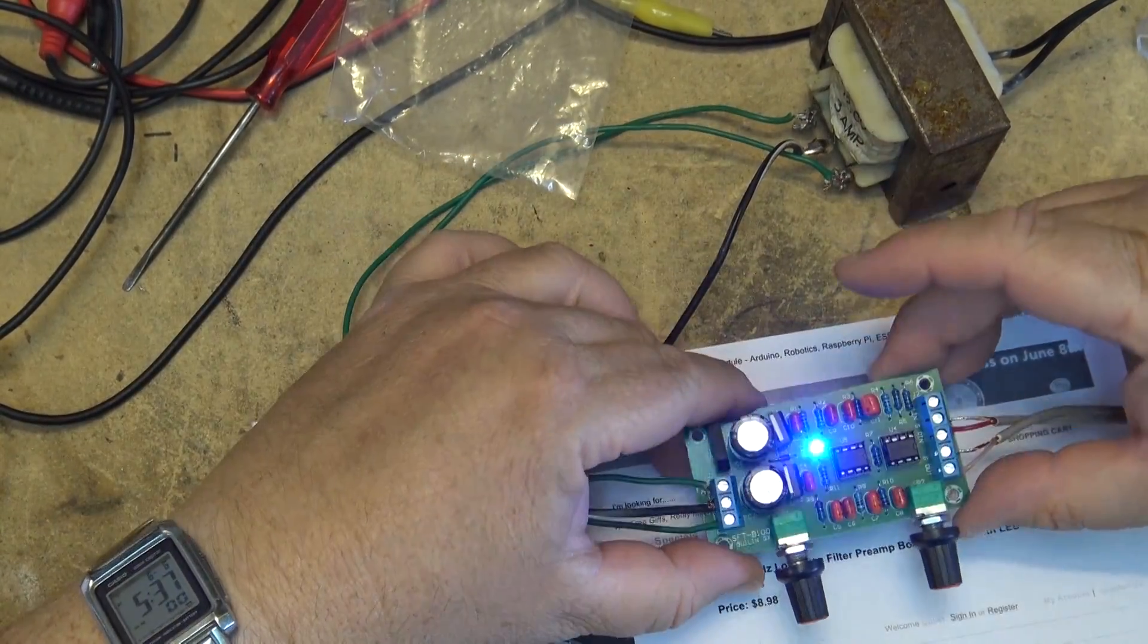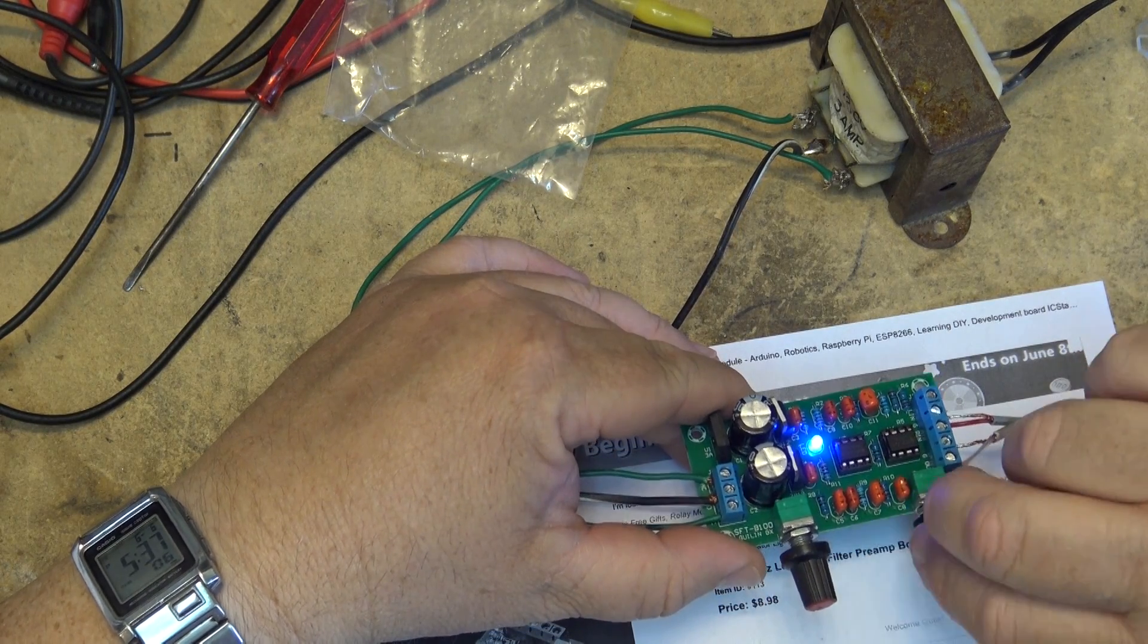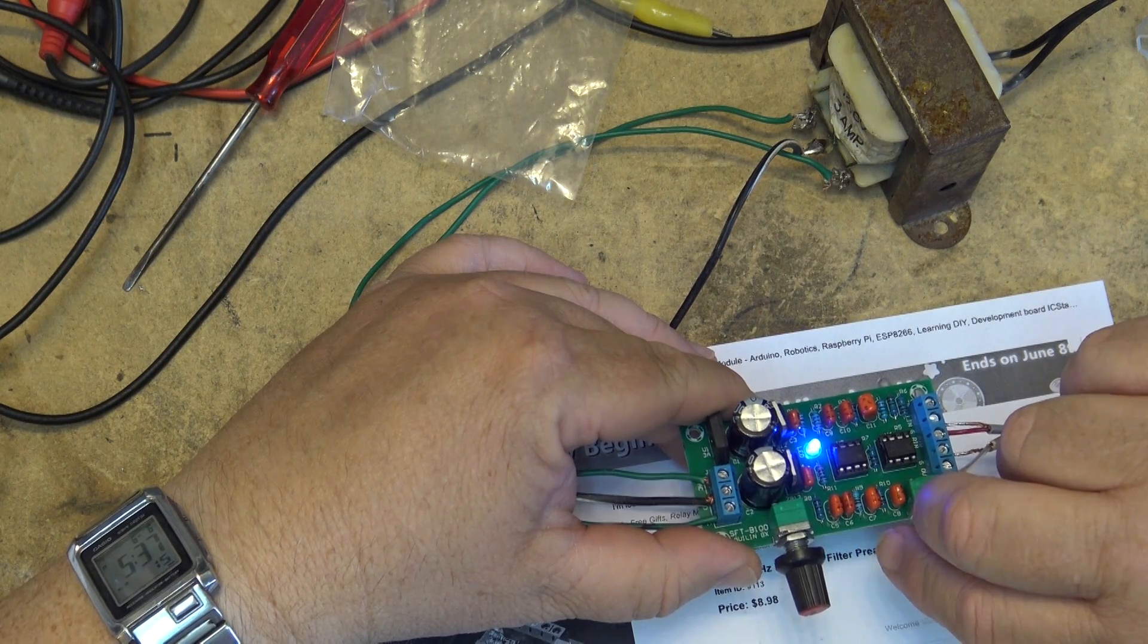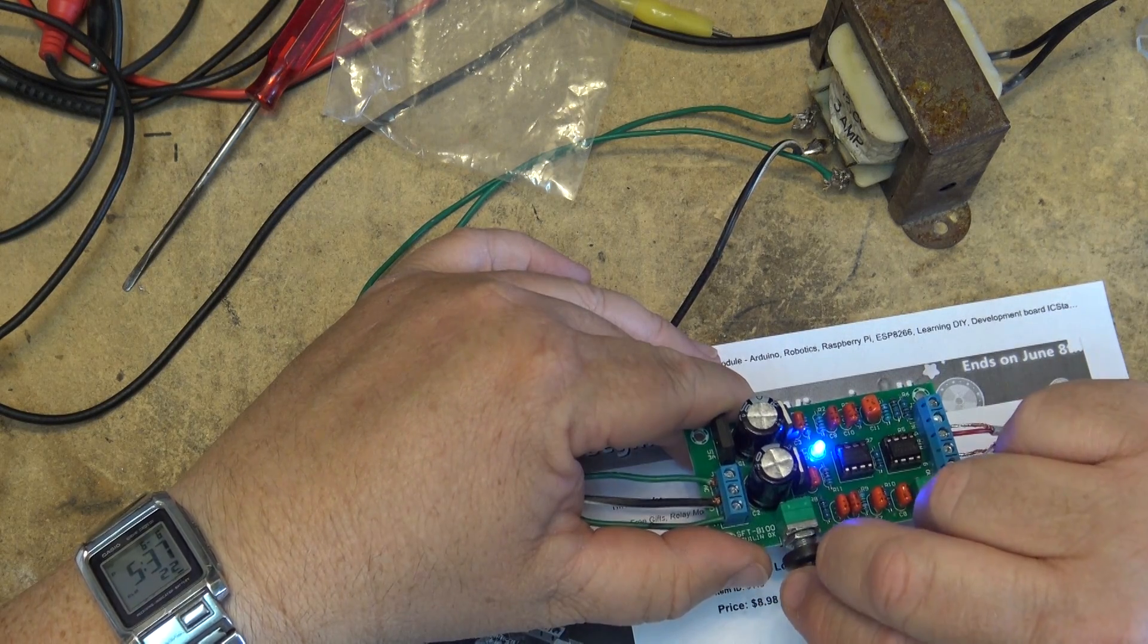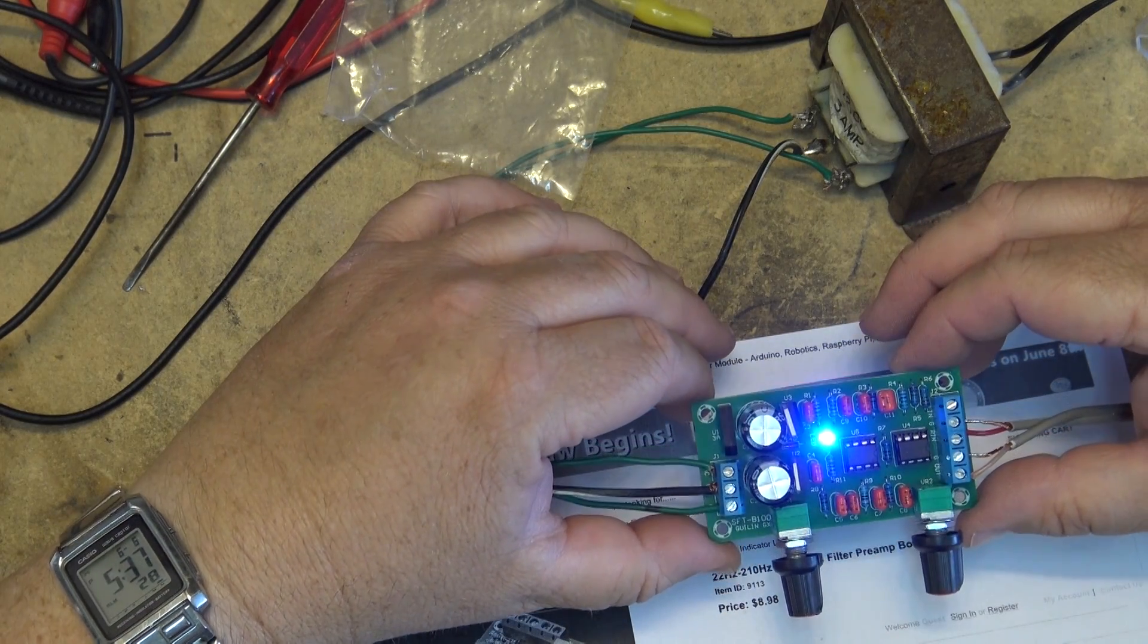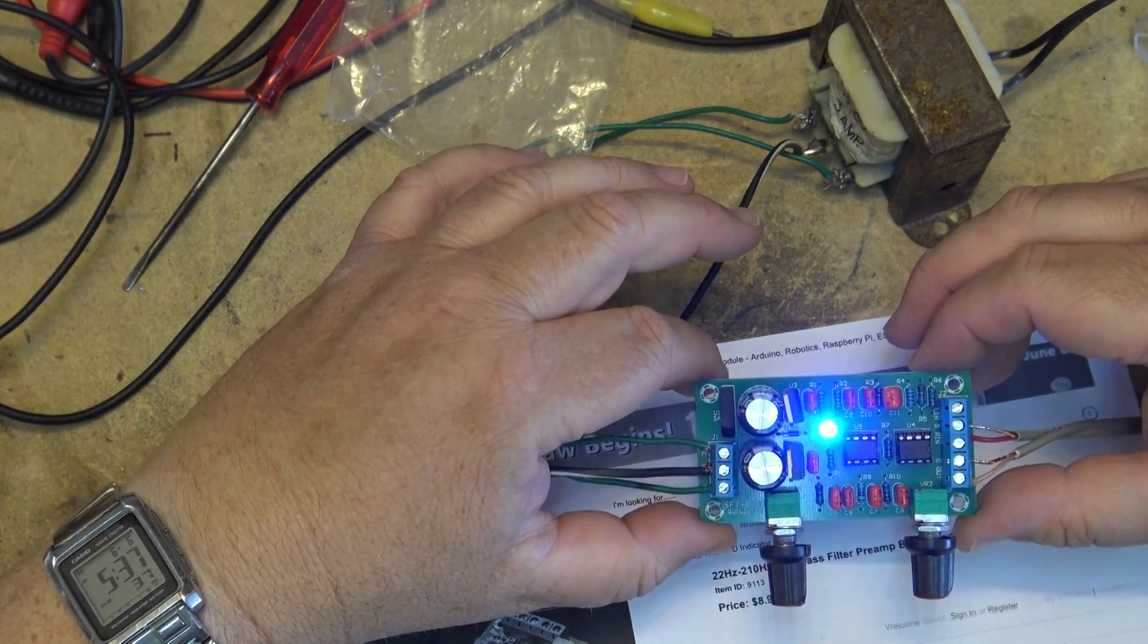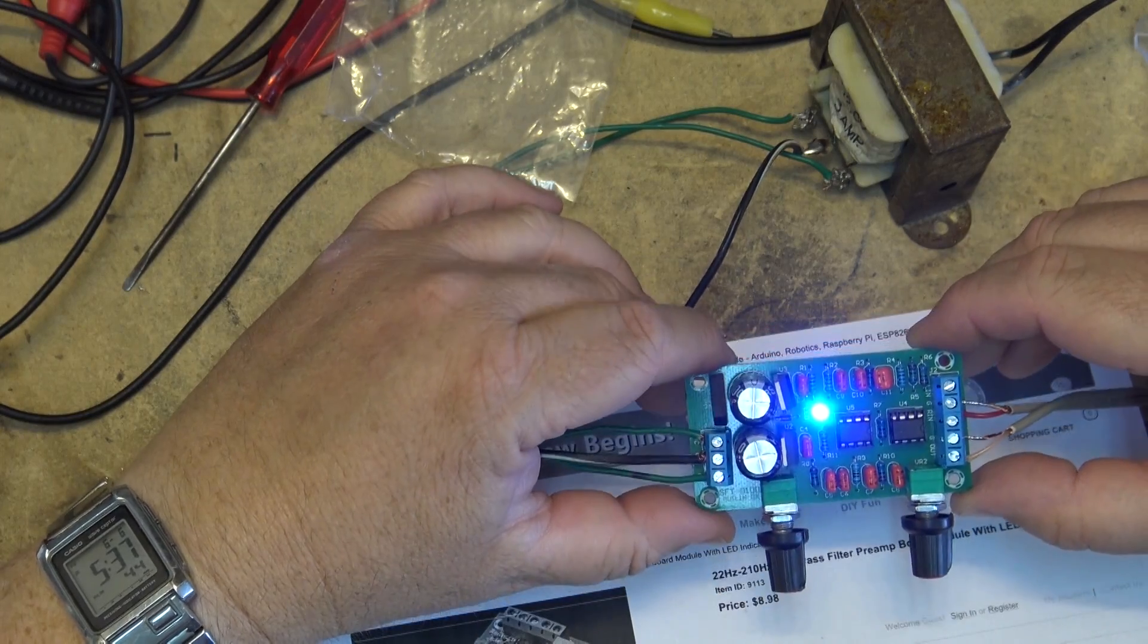There's the low-pass filter preamp board. As you can hear. With this you can drive a big power amp into your bass bins, your subwoofers. That's what this is - a subwoofer driver to turn any conventional amplifier into just a bass amplifier. Feed your signal in, get your signal out. Just the low frequencies. Low-pass filter.